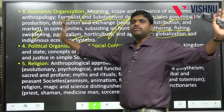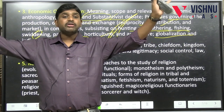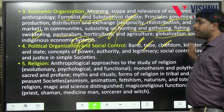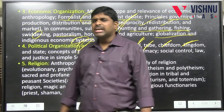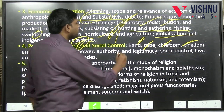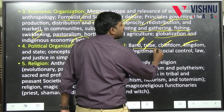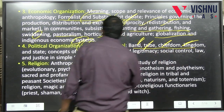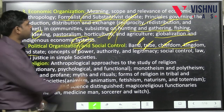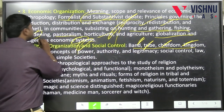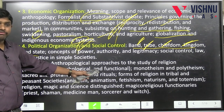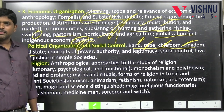Unit 4 covers political organization and social control: band, tribe, chiefdom, kingdom, state level — an evolutionary progression from band to state. Unit 5 covers religion. Politics and economics control people, but religion is the most powerful controlling force — Karl Marx called it the 'opium of the masses.' A super powerful, unquestionable authority watching everyone at all times — that is religion.